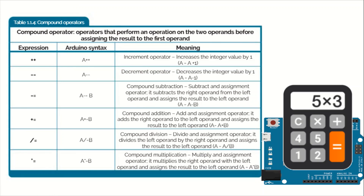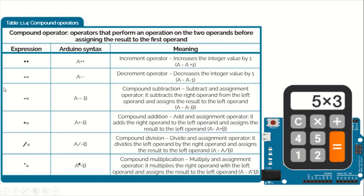Now let's move to the compound operators. Compound operators perform an operation on two operands before assigning the result to the first operand. So 'a++' means a plus one — the double plus means a will be incremented by one each time. Similarly, 'a--' means a will be decremented by one each time.